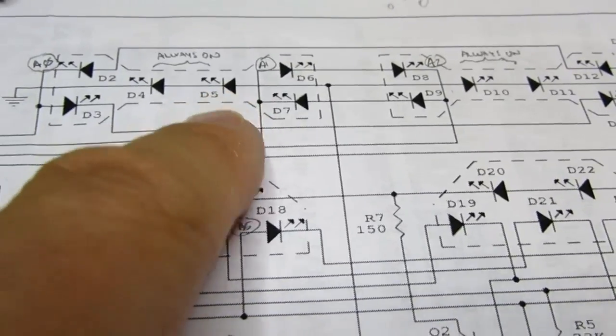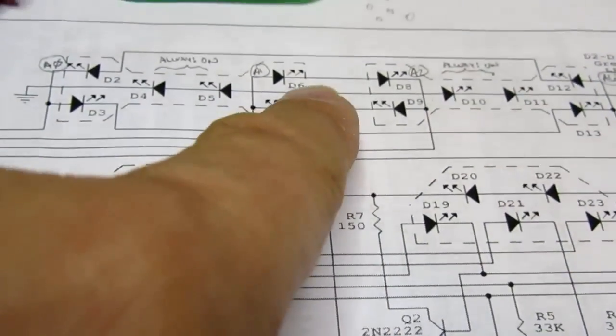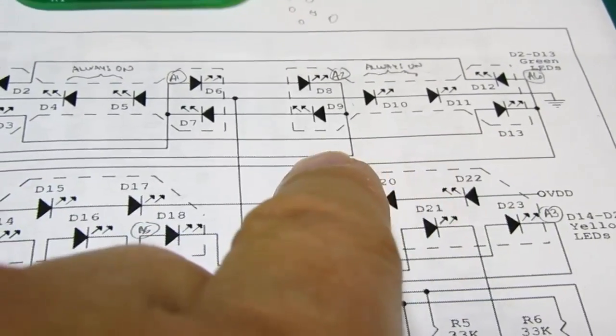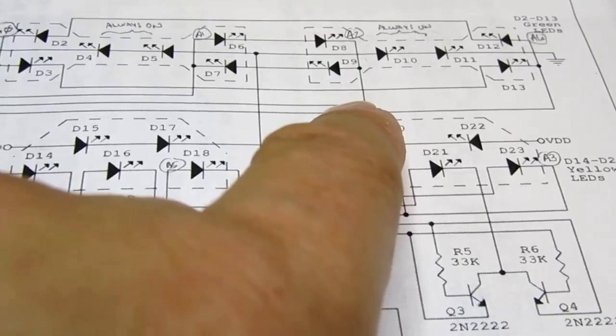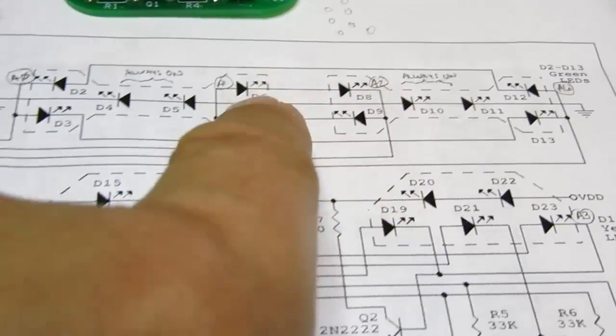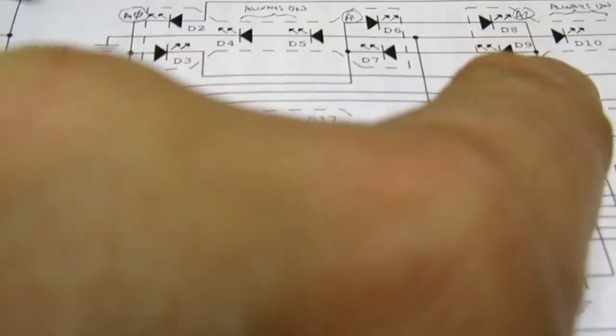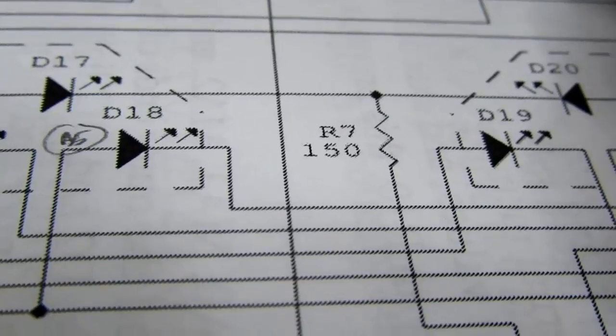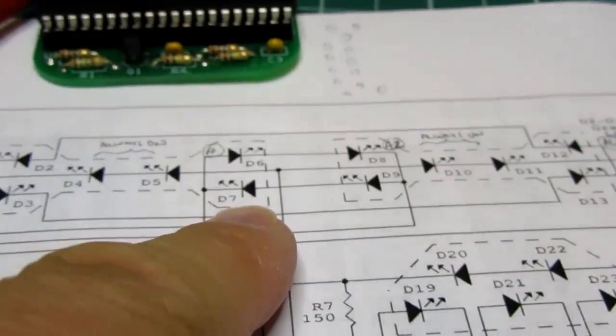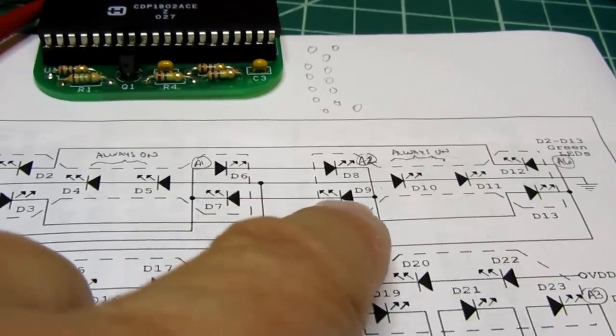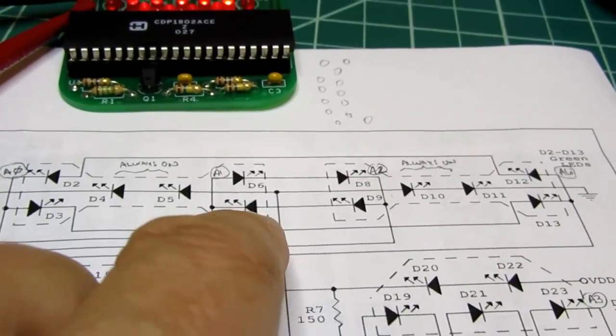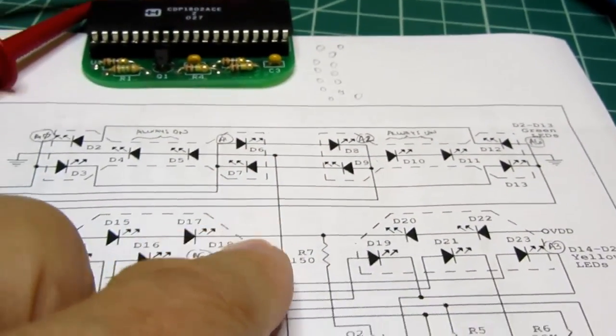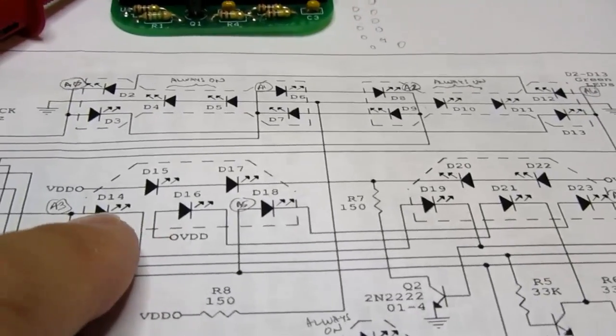These two LEDs, the middle of the eyebrows, are always on. They're just straight from VCC through a resistor to ground. The same goes for the middle eyebrows here. Then the lower eyebrows can do some different things. These two are actually in series between A1 and A2, and likewise, these two are in inverse series connection. So between A1 and A2, you can get off, or two of them on, or the other two on.